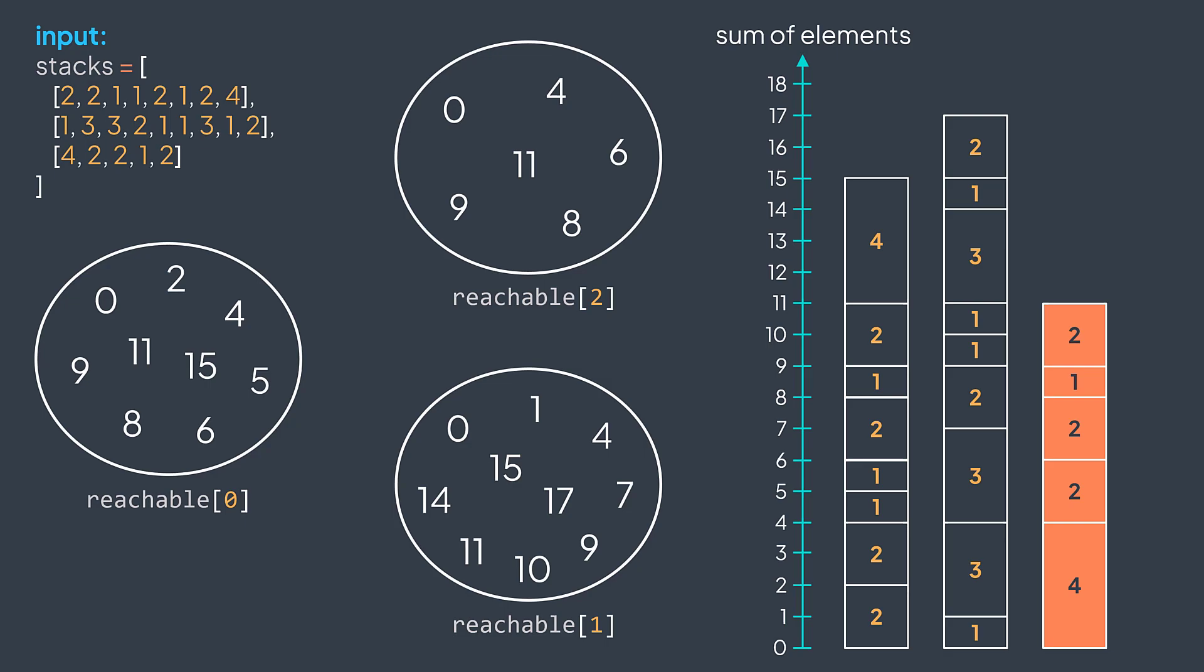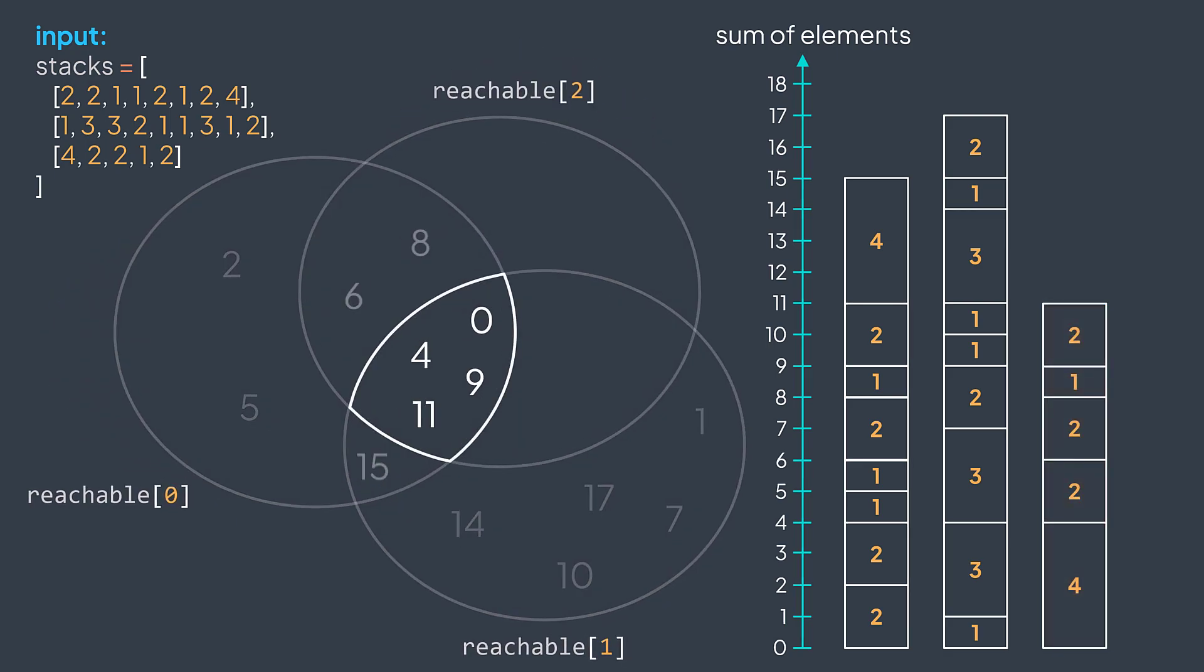Now that we have our sets, we calculate the intersection. We get zero, four, nine, eleven. We take the maximum, it's eleven. And we found the greatest sum that is reachable by all the stacks.